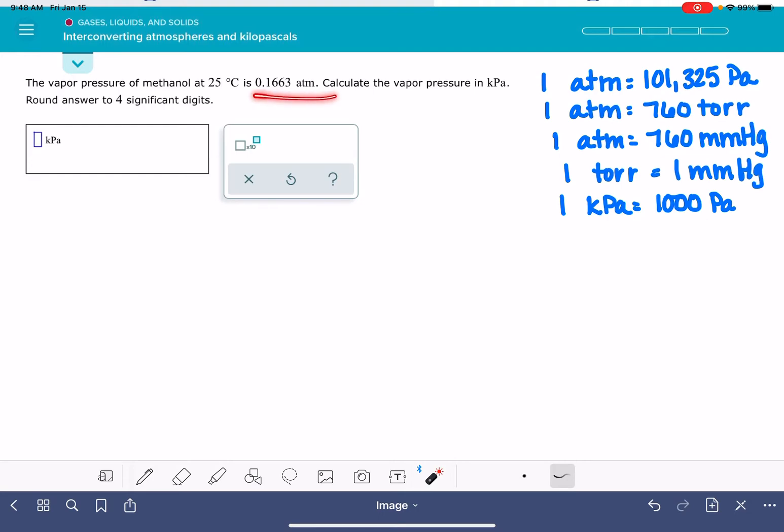In this problem, I am being given the pressure unit 0.1663 atmospheres and being asked to convert this into units of kilopascals, which means that I want the units of atmospheres to be down on the bottom so that they cancel.